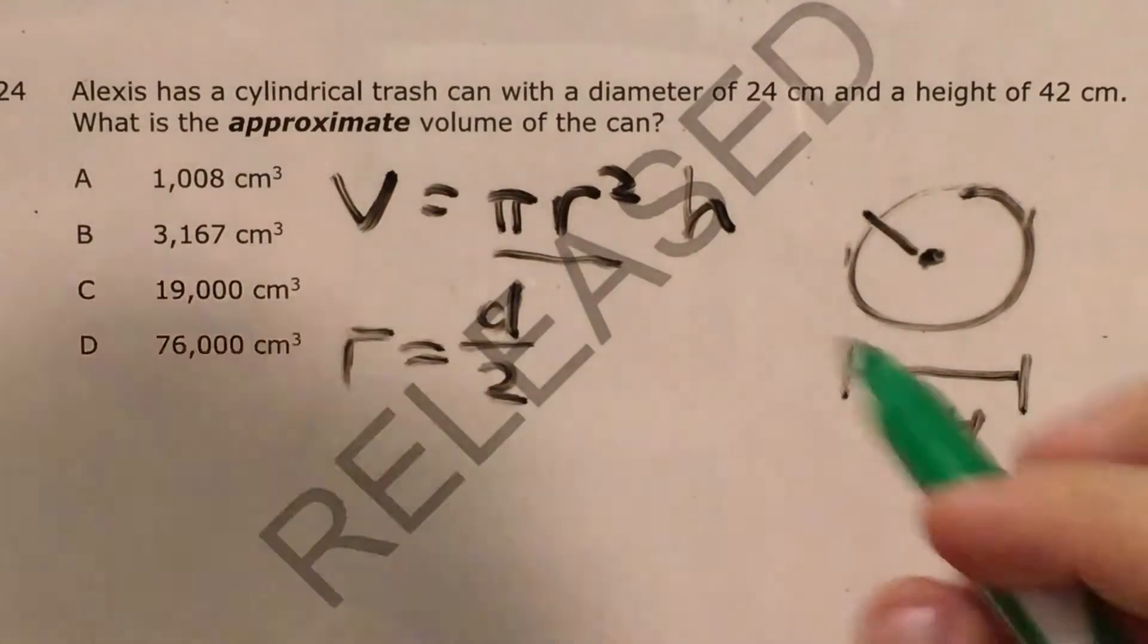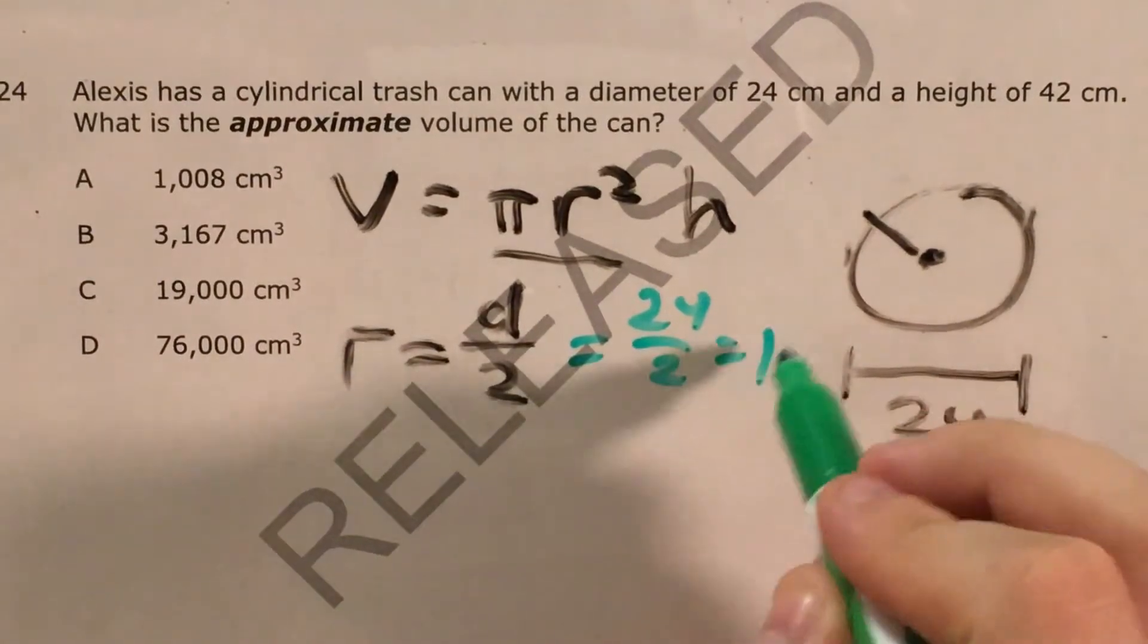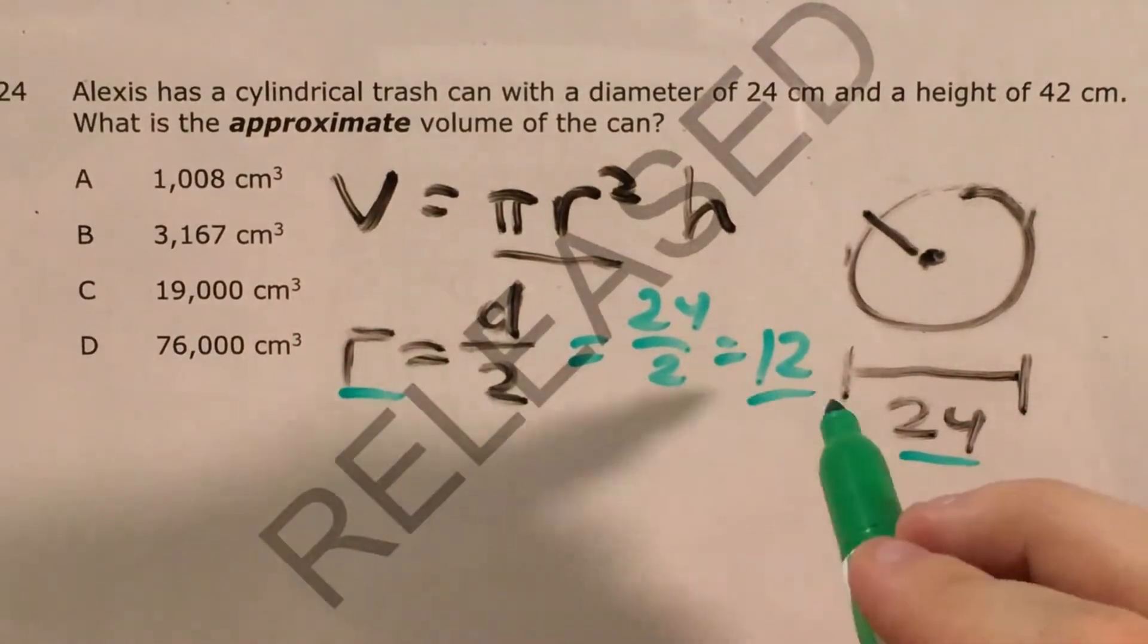So in this case, our diameter is 24, so 24 divided by 2 equals 12. Our radius is 12.